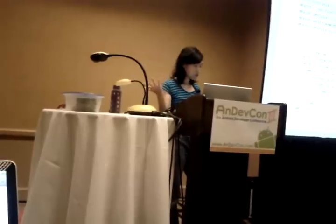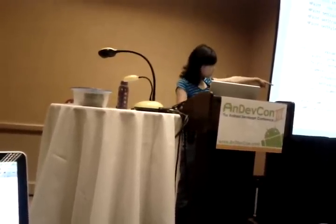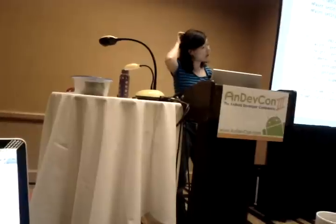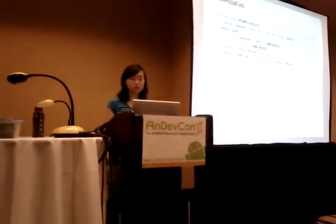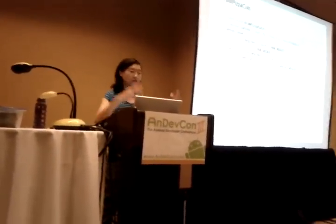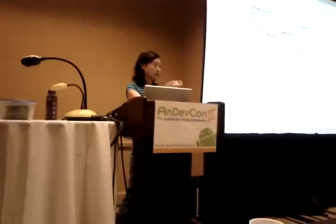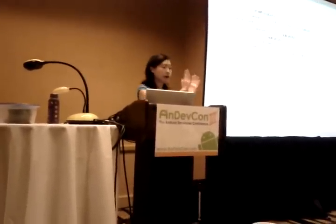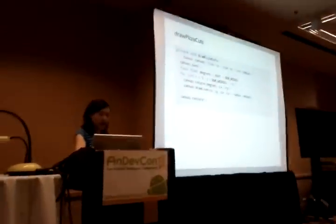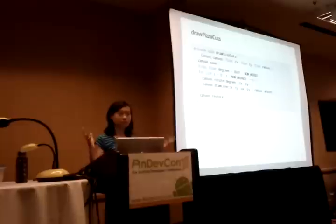I'm just doing math to compute how big the pizza should be and where the center is. I have two helper functions that draw the pizza itself. The first line calls canvas.drawCircle at the center I just computed, at the radius, using the paint defined earlier — the yellow fill. I have a helper function called drawPizzaCuts which, like you suggested, rotates the canvas. I compute the degrees from the number of wedges — so if I have 10 wedges, each time I rotate by 36 degrees — then draw a line from the center to the edge, and repeat until done.